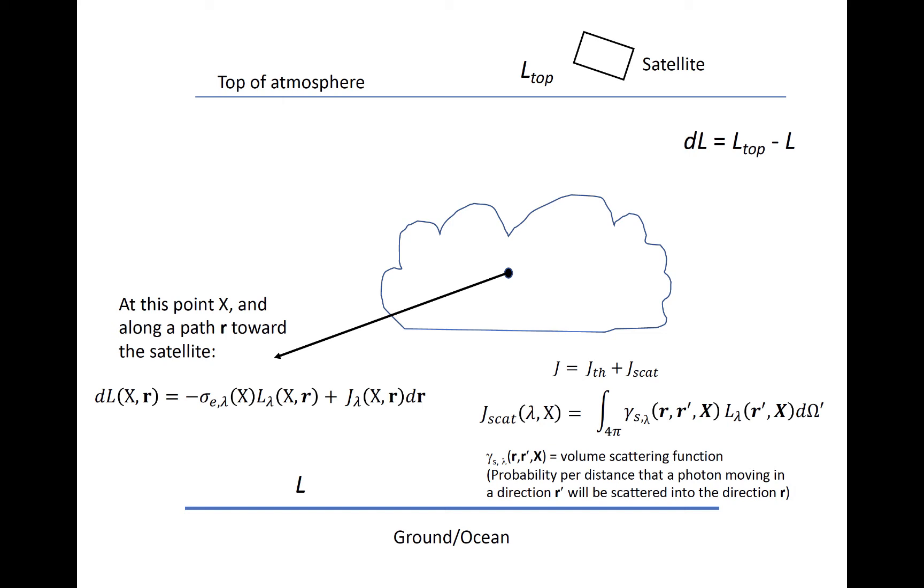To summarize the past few slides, each of the two terms seen in the equation on the left have two terms within them. We can further expand on this form of Schwarzschild's equation, and we'll do so in the next module for various idealized radiative transfer scenarios.